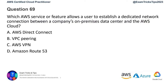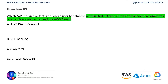Question number 69: which AWS service or feature allows the user to establish a dedicated network connection between a company's on-premises data center and the AWS cloud? Please read the question and mark your keywords — half the sentence here is a group of keywords. We'll go by elimination technique; some of these options are new services, while option A and C we've covered previously.